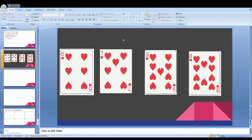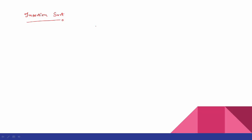This is the insertion sort. Now, to trace it, we will see a physical tracing. We have a random array: 32, 10, 40, 8 and 5.